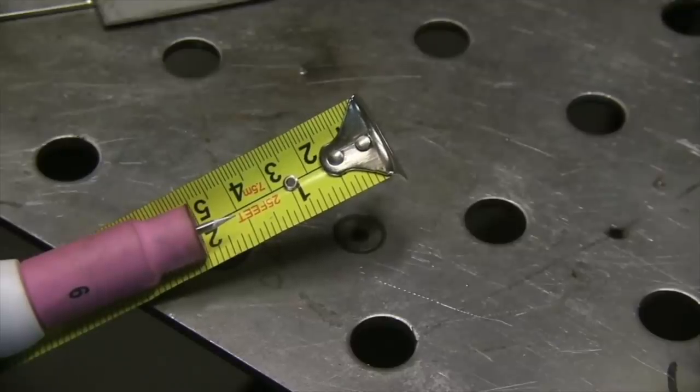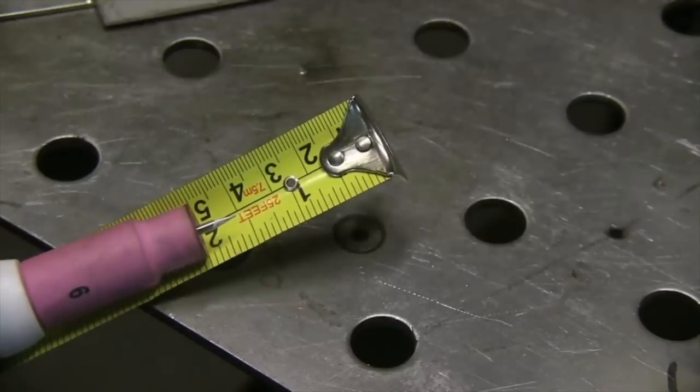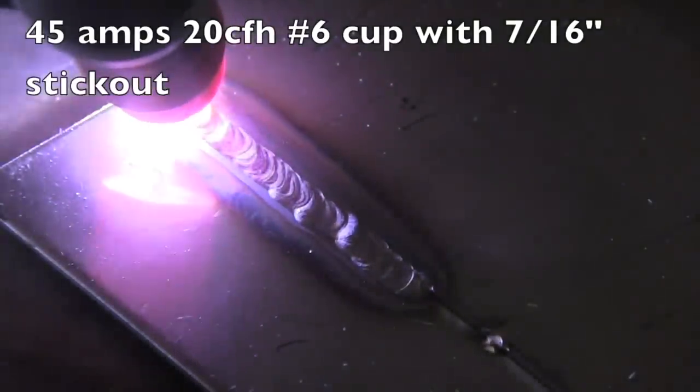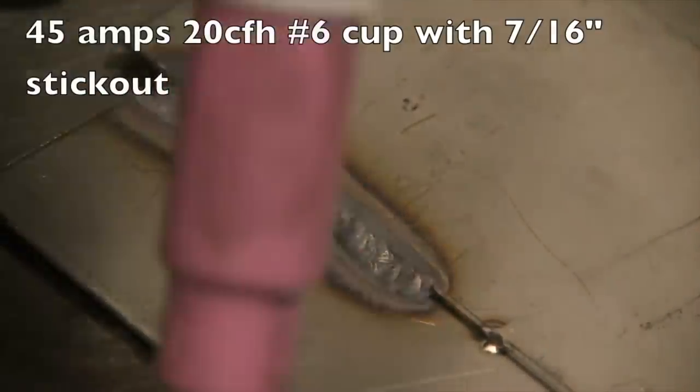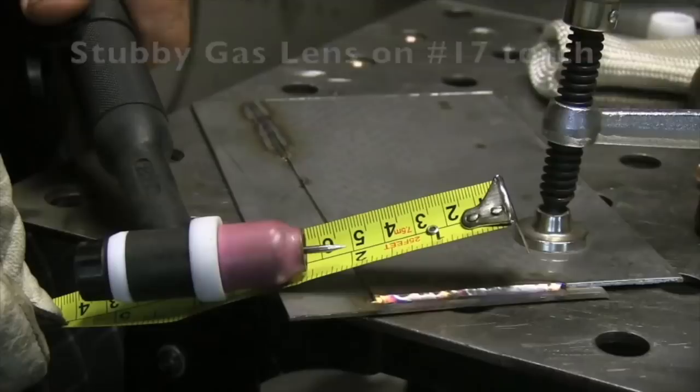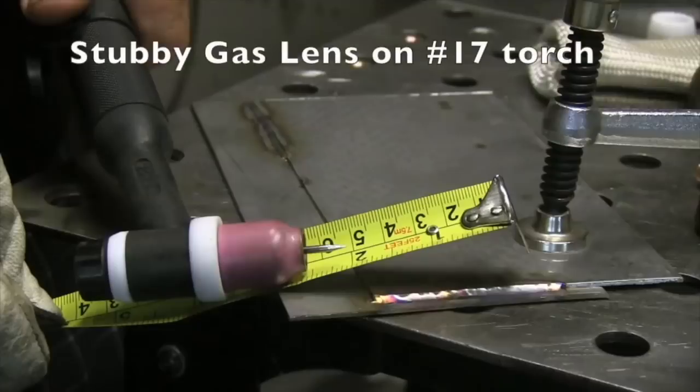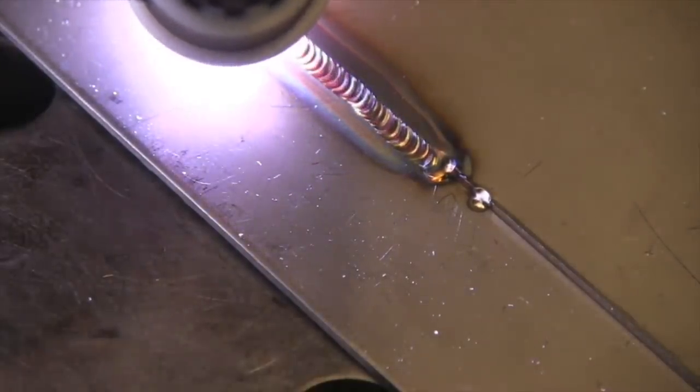Up next is a stubby gas lens kit for 17, 18, and 26 style torches. This is what a standard cup you get when you get a TIG torch or TIG machine or whatever and there's nothing really wrong with them, you're just a little bit limited on stick out. So I've got 7/16 of stick out here with 20 CFH on a number six cup on stainless steel and it wasn't quite cutting it. Same exact stick out on a number six gas lens cup, 20 CFH, didn't change anything and you can see the difference. Sometimes the difference is very subtle but in this case it's very obvious. One of them came out shiny like you kind of want it and the other one was dull and gray and was swimming around.